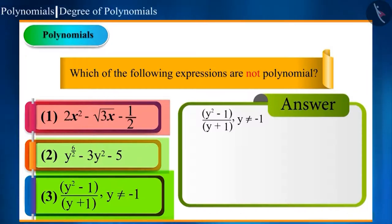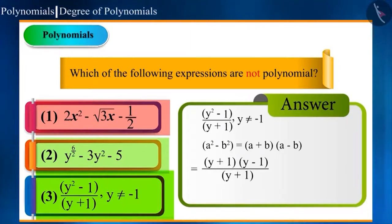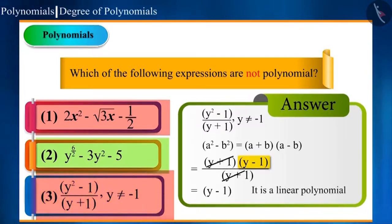Like using algebraic identity, a² - b² = (a + b)(a - b). The numerator can be written as (y + 1)(y - 1). This would become y - 1 by cancelling y + 1 from numerator and denominator. Hence, it is a linear polynomial.